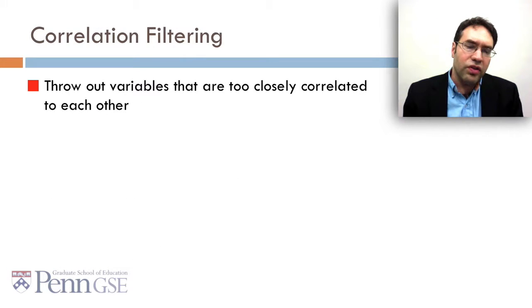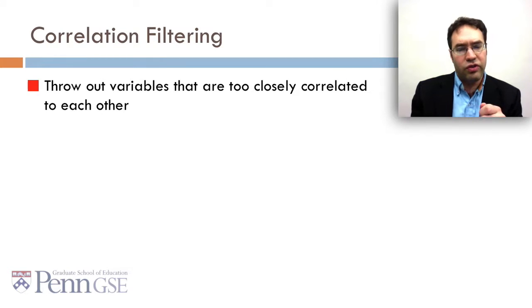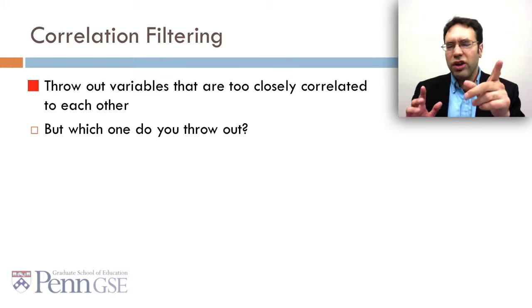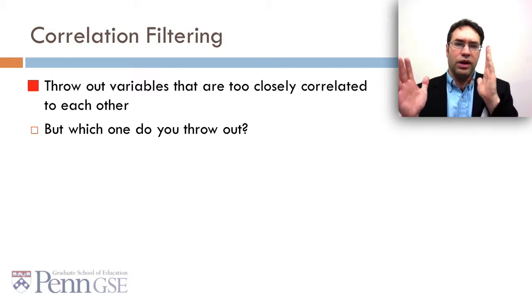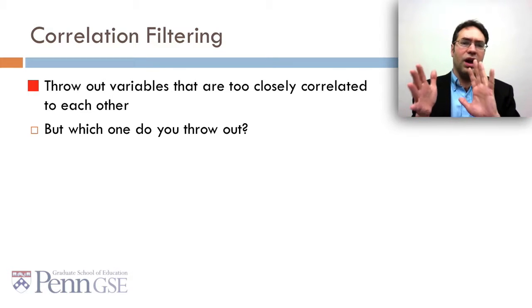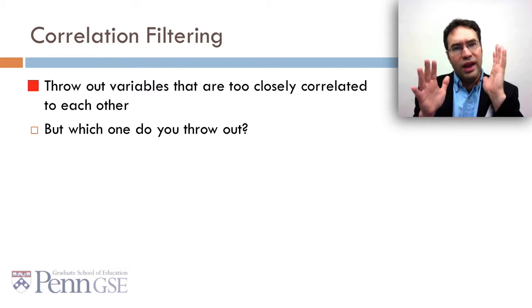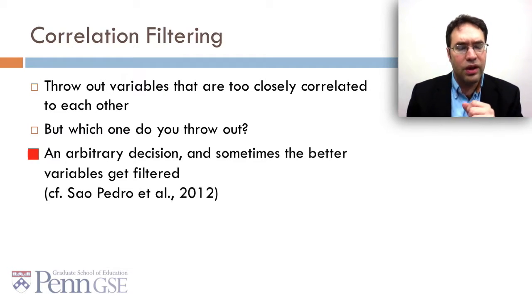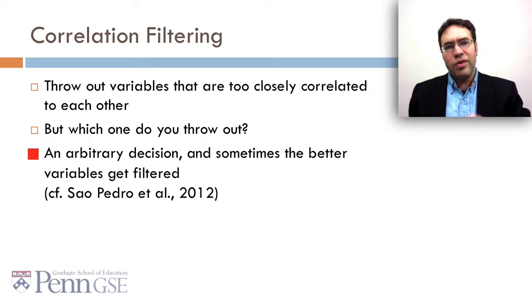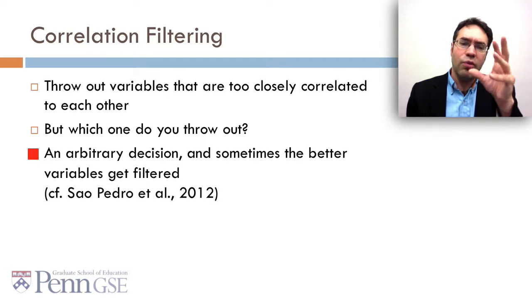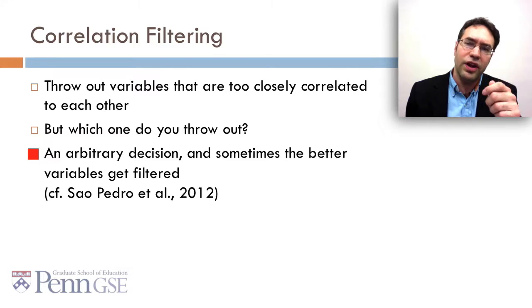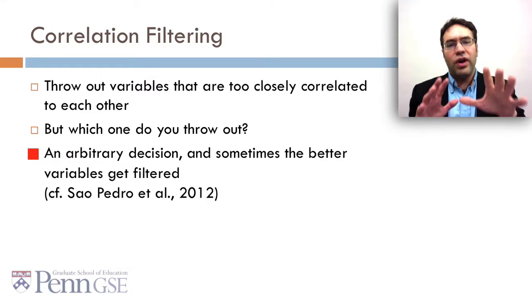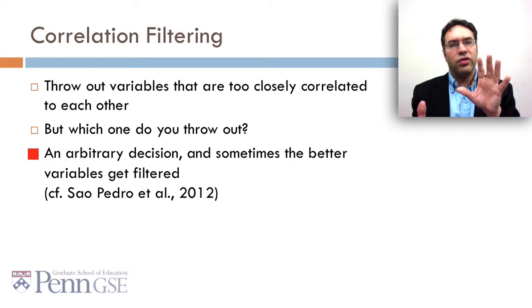One approach for doing this is correlation filtering. With correlation filtering, you throw out variables that are too closely correlated to each other. But the trick is, let's say you have two variables A and B and they're correlated at 0.99, or better yet at 0.85, so you know you want to get rid of one of them. But which one do you throw out? It's an arbitrary decision, and sometimes when you do this, the variables that actually have more construct validity or better fit to the data are the ones that get filtered out. And Mike Sao Pedro has a nice example of the cost of doing this, which is sometimes worse performance on new data.